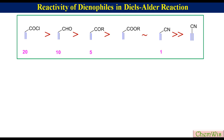Propionitrile is far less reactive than acrylonitrile because the double bond taking part in the Diels-Alder reaction is not in conjugation with the electron-withdrawing nitrile group, as it is perpendicular to the nitrile triple bond.